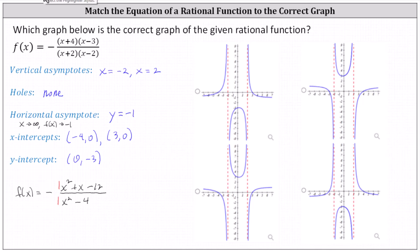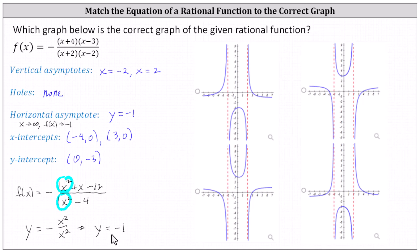Another way to find a horizontal asymptote is to focus only on the term with the highest degree in the numerator and the term with the highest degree in the denominator, and see what happens as x approaches infinity. Looking at y equals the opposite of x squared divided by x squared, we can simplify x squared divided by x squared to one, giving us y equals negative one. Since there's no variable remaining, this also verifies the horizontal asymptote is y equals negative one.